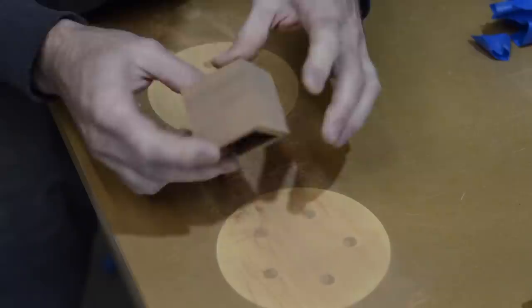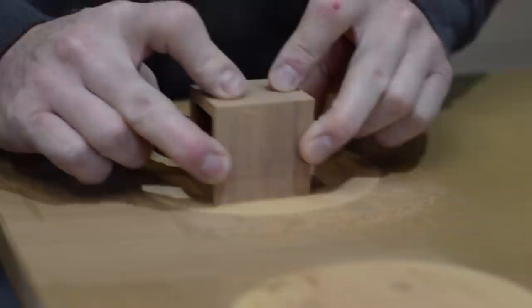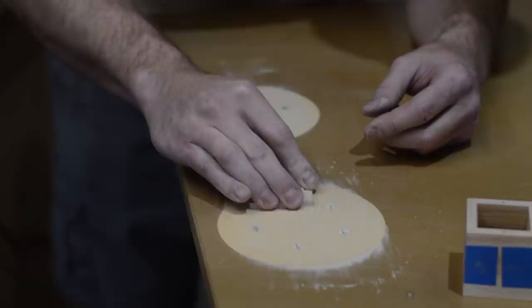Here's another pro tip. On a small project like this, your second to last grit sand against the grain to create cross grain scratches. Then on your final grit, all you need to do is remove those cross grain scratches and you have a perfect surface.